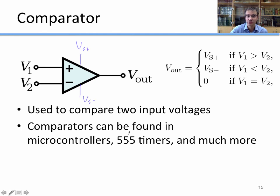Comparators are used in a wide variety of circuits, including microcontrollers, 555 timers, etc. Now an op amp might not be the most efficient way to build a comparator, but you can do it.